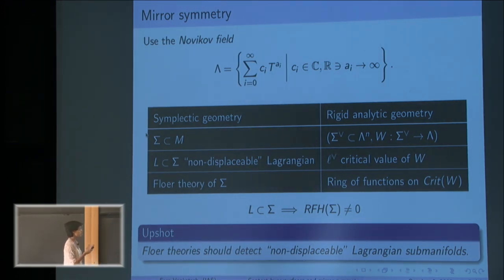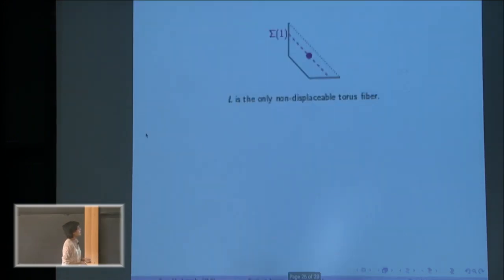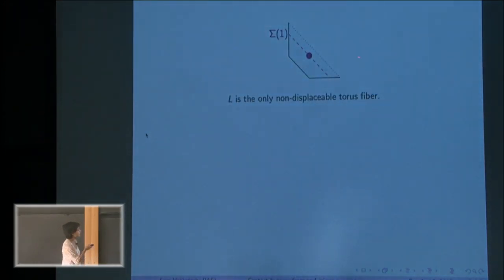So let's just see what happens when we work over Lambda. So in this example, it turns out there's kind of one non-displaceable Lagrangian, and it is the fiber over this point sitting in the radius one sphere.